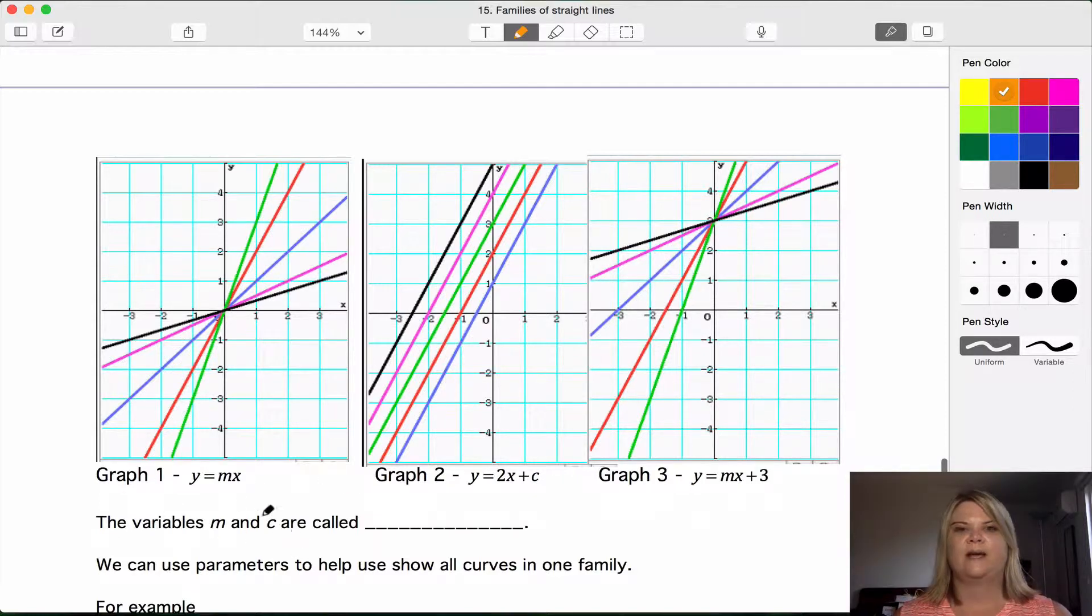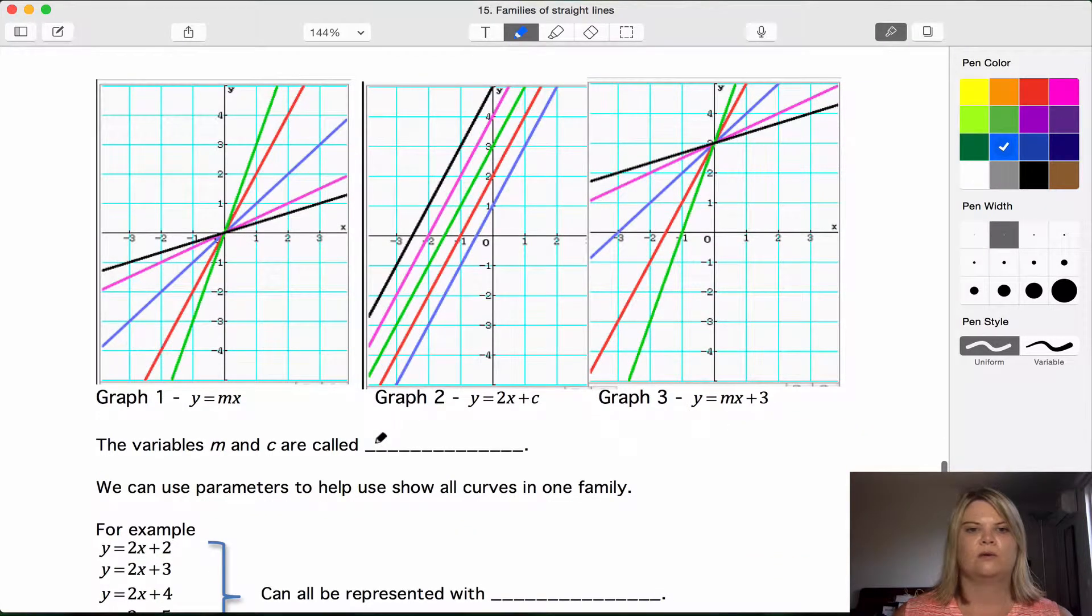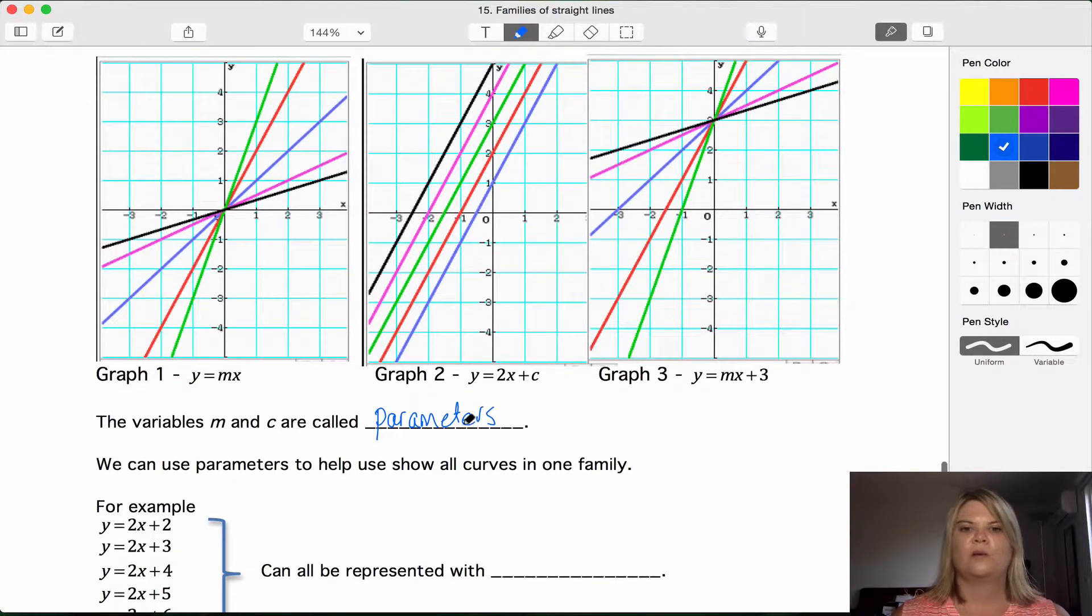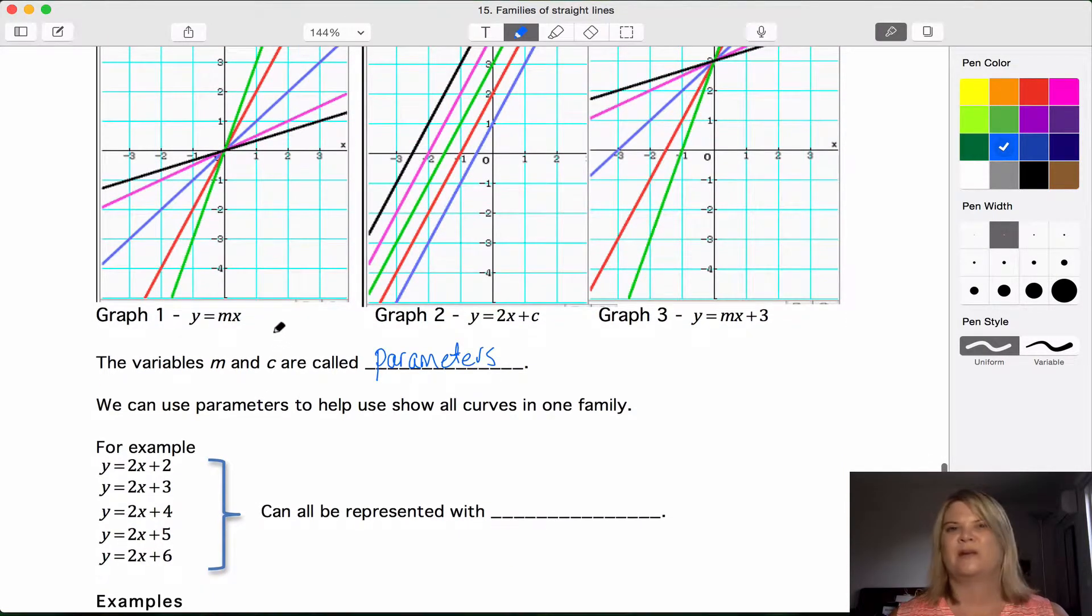These variables m and c are called parameters and they can be really useful to show us a family of graphs when we want to talk about all the graphs that go through that have a y intercept of 0 or all the graphs that have a y intercept of 3 or all the graphs that have a gradient of 2, but we don't want to have to write them all out.